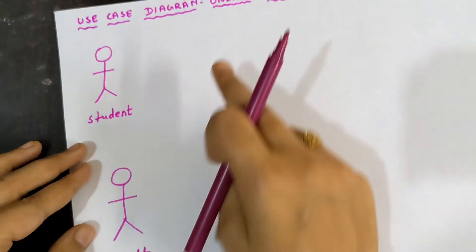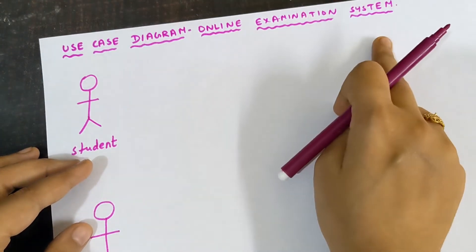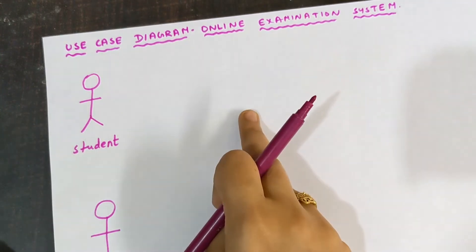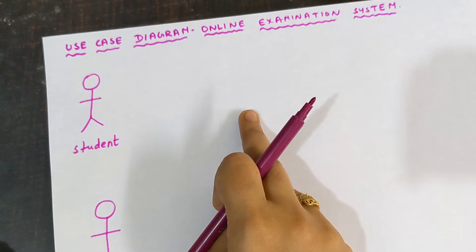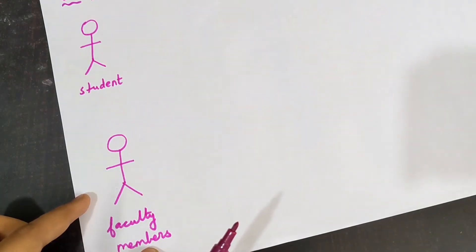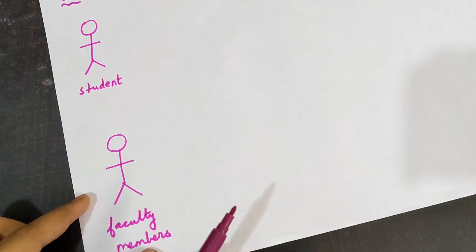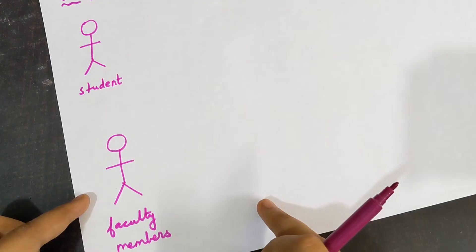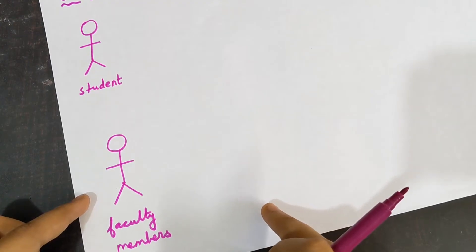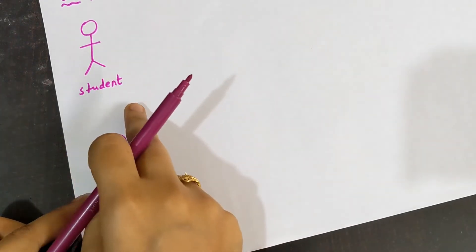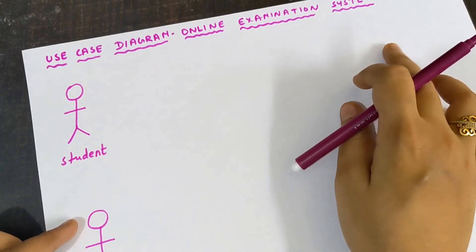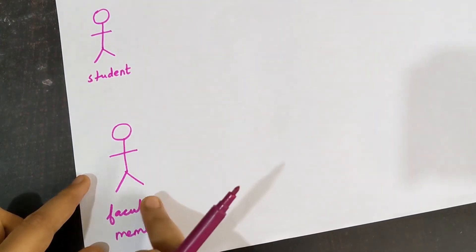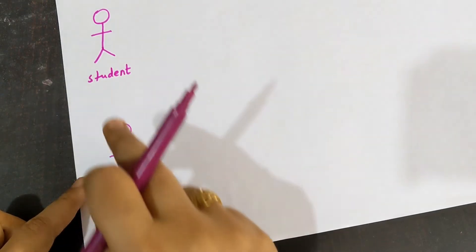These are the two actors involved in the online examination system. The student is necessary to take up the examination, and the faculty member is needed to check the answer sheet and to set up the question paper. Someone needs to answer the questions — that role only the student can play. So the important actors are student and faculty members.